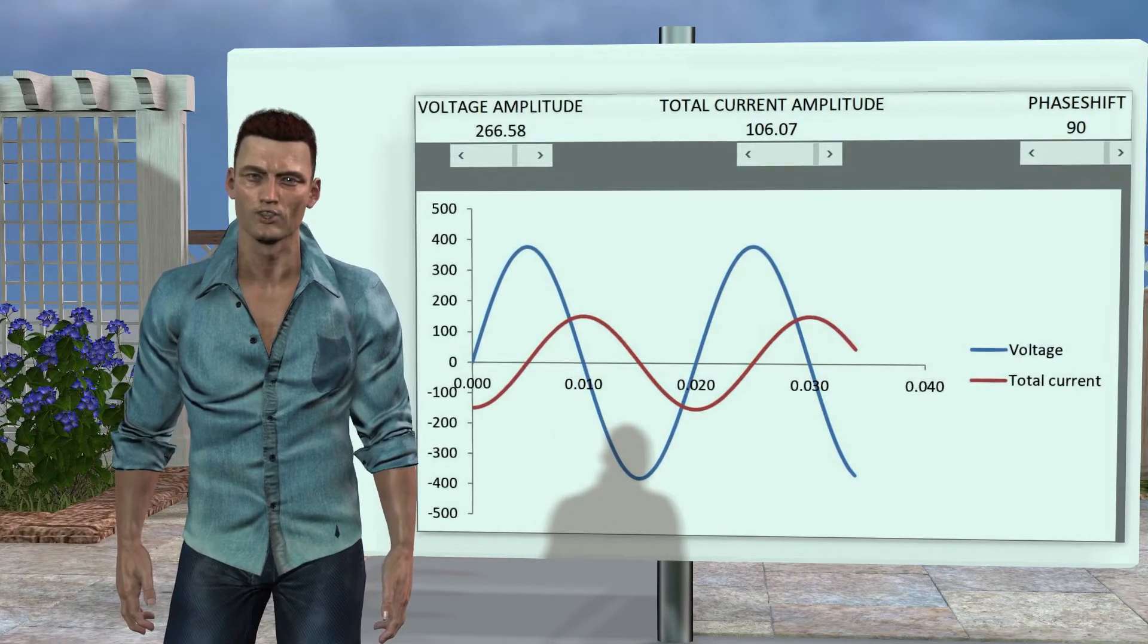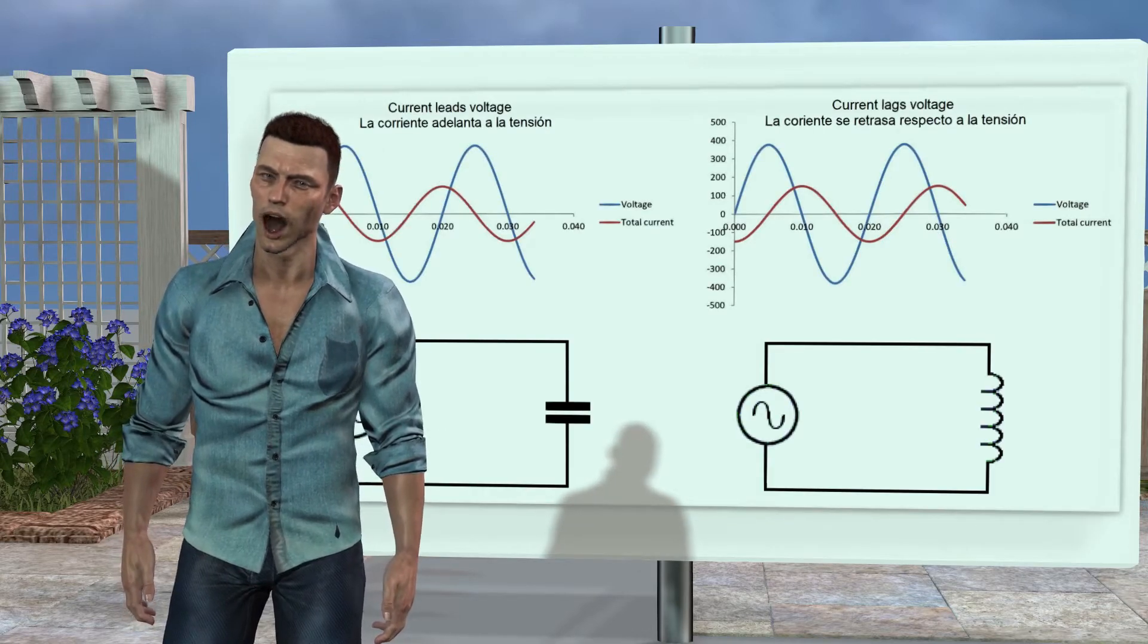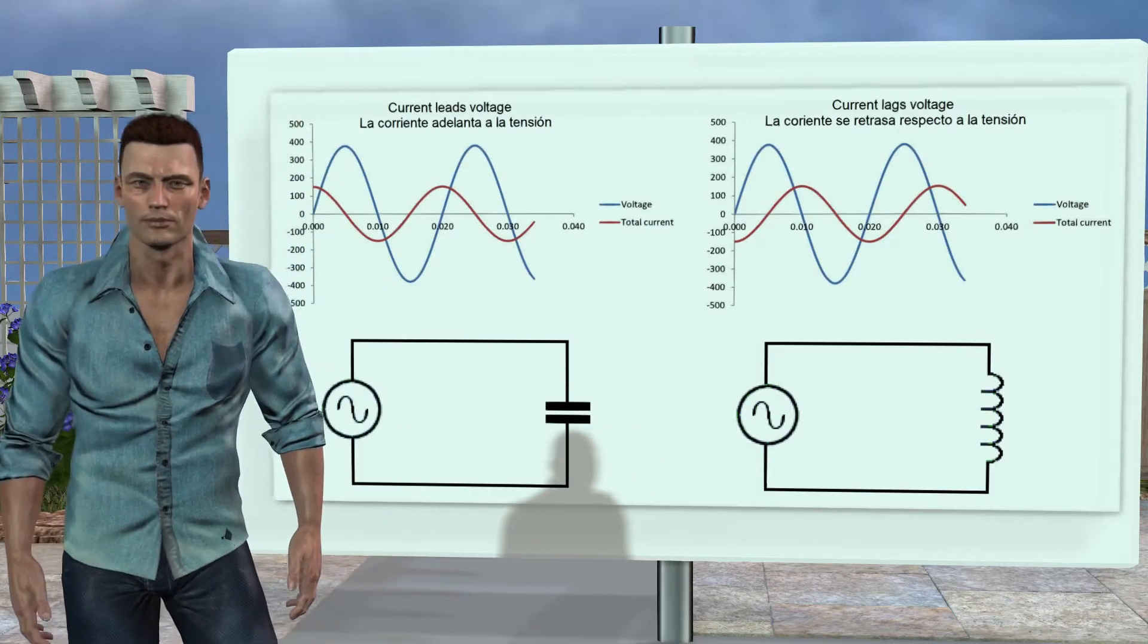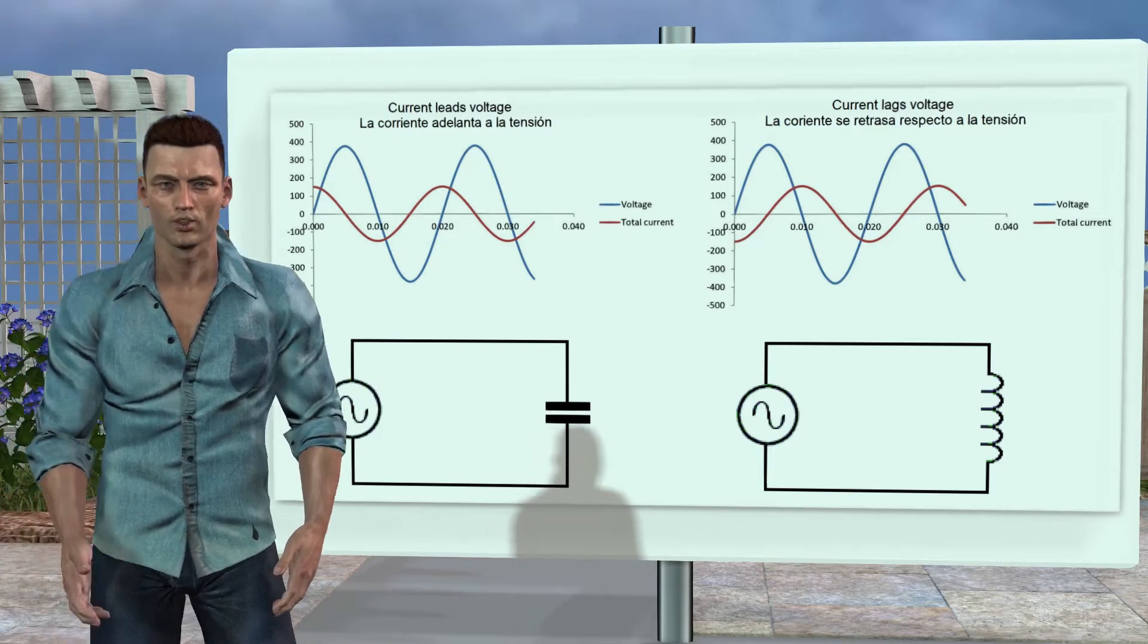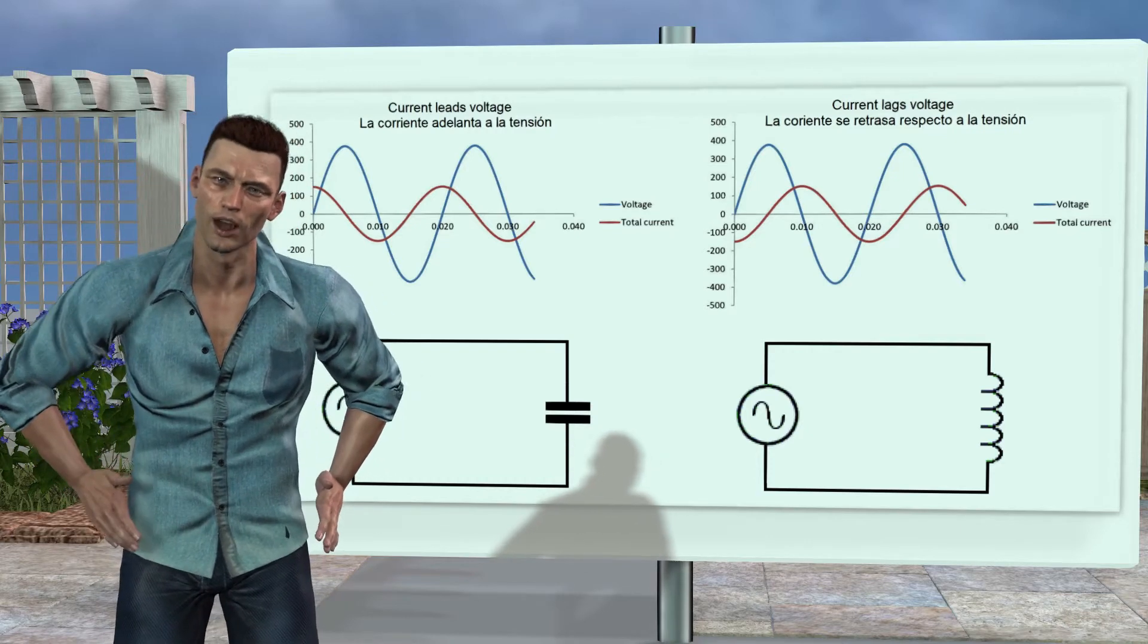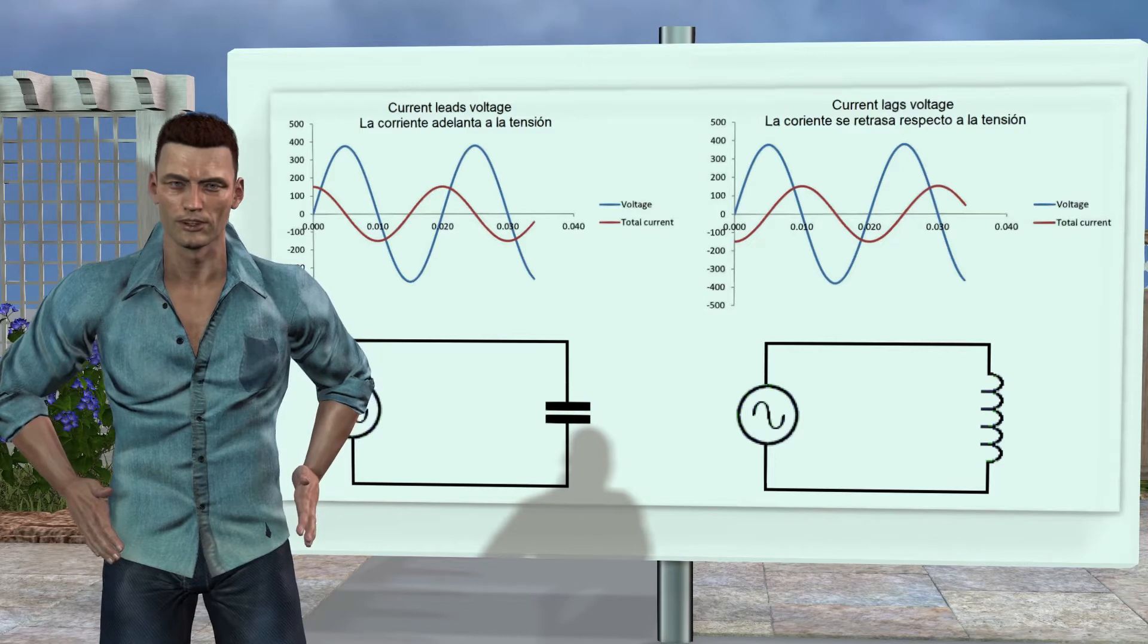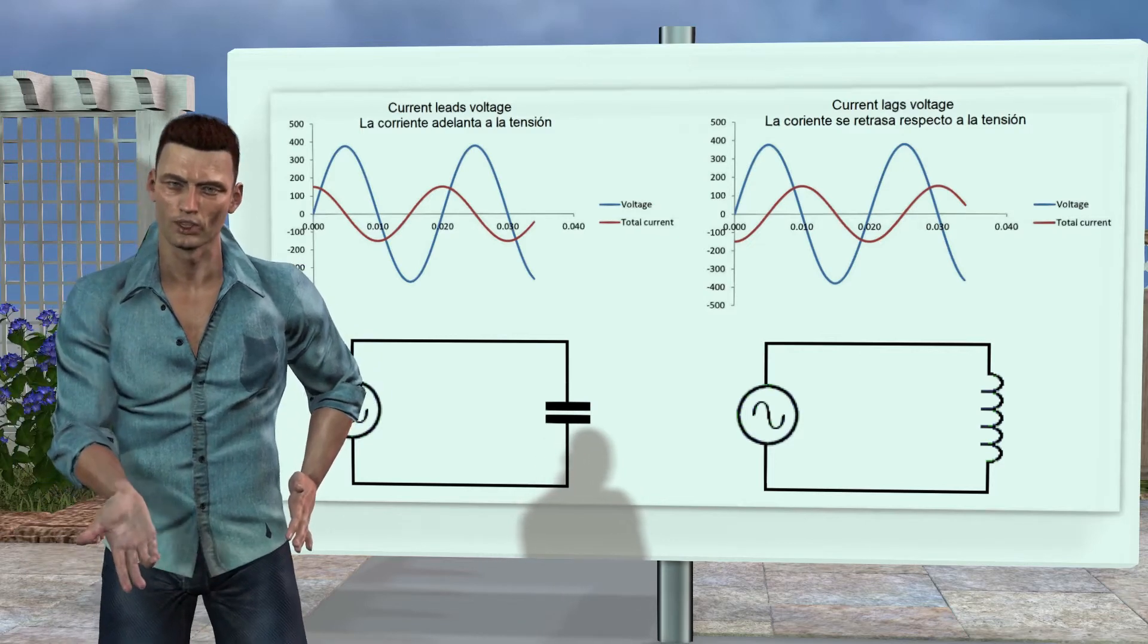If instead of considering a coil, that is, an inductive load, we consider an ideal capacitor, that is, a capacitive load, then the current would also be 90 degrees out of phase with respect to the voltage, but in this case the maximum current would be produced before the maximum of the voltage, that is, in a capacitive circuit the current leads the voltage.